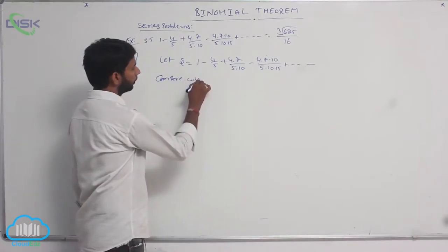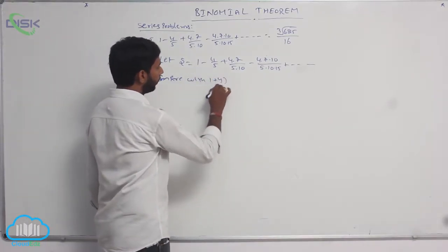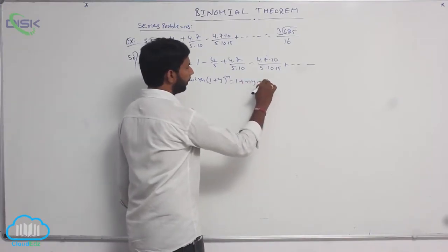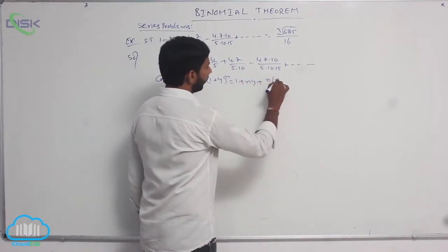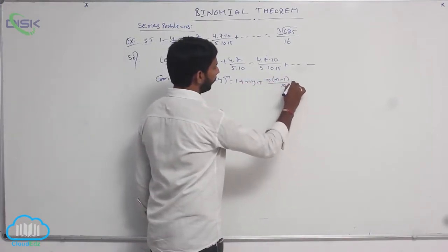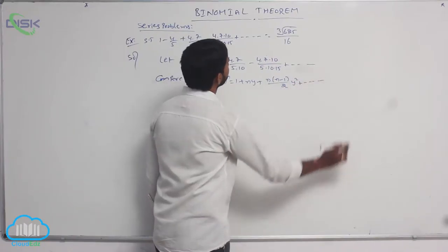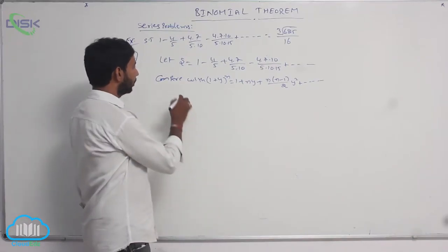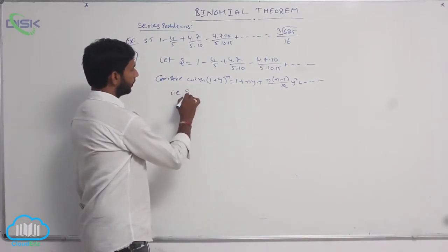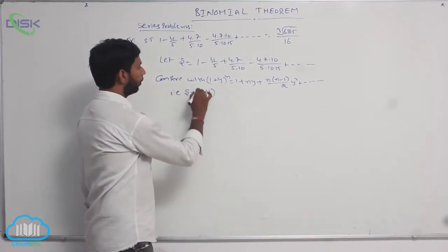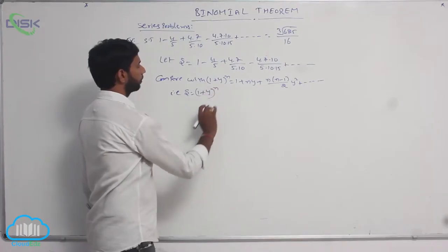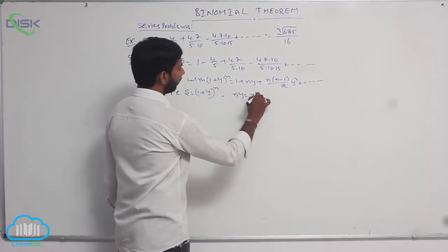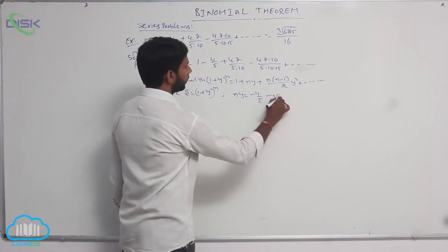Let the given series be S. Compare with the binomial expansion (1+y)^n = 1 + ny + n(n-1)/2 · y² + and so on. By comparing, we get condition 1: ny = -4/5.